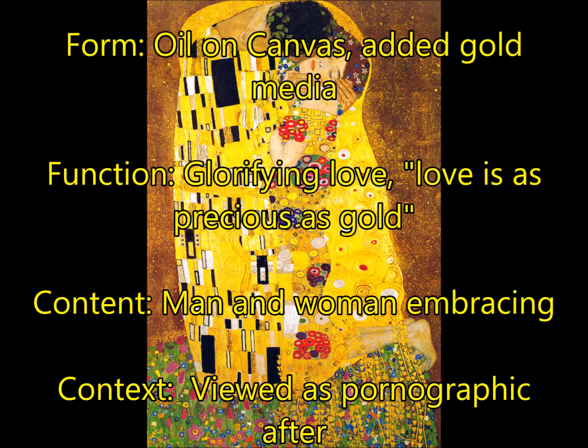For function, this is glorifying love — love is as precious as gold, he says in his painting. And this is coming at the end of the Victorian era, so it's going to be viewed as pornographic. For content, there's a man and a woman embracing in a very sensual, loving kind of manner, which was perceived as sexual at the time.